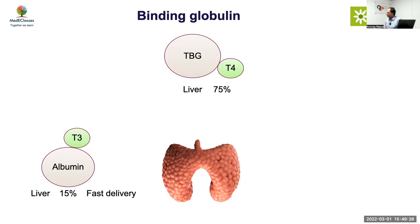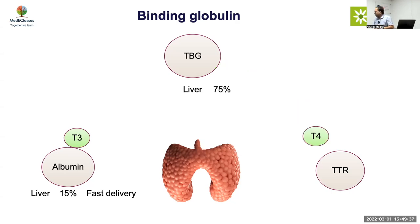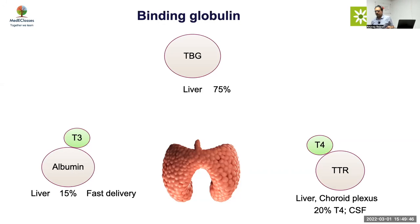The third carrier is transthyretin, which is not very relevant from a general circulatory perspective. It is mainly binding T4, and its main role is in the CSF - within the brain transport, transthyretin is important. Now, why are we spending so much time on binding globulins? Because 99.97% of T4 and 99.7% of T3 are bound, and only the free forms are active.